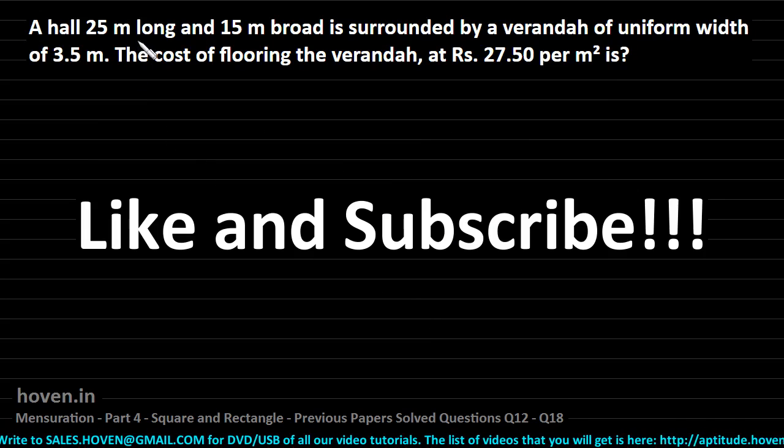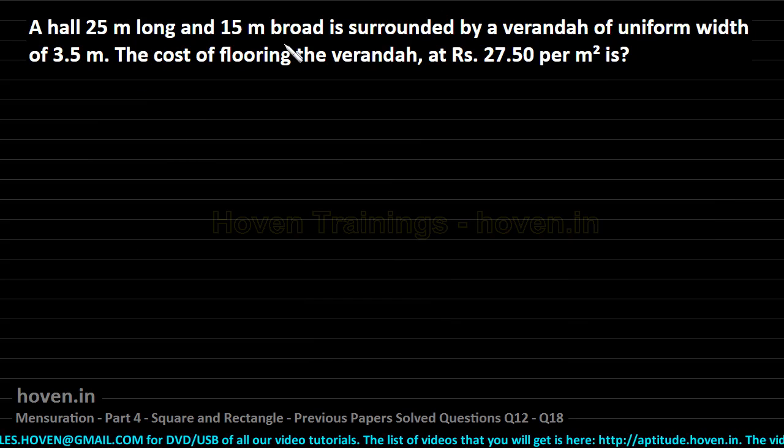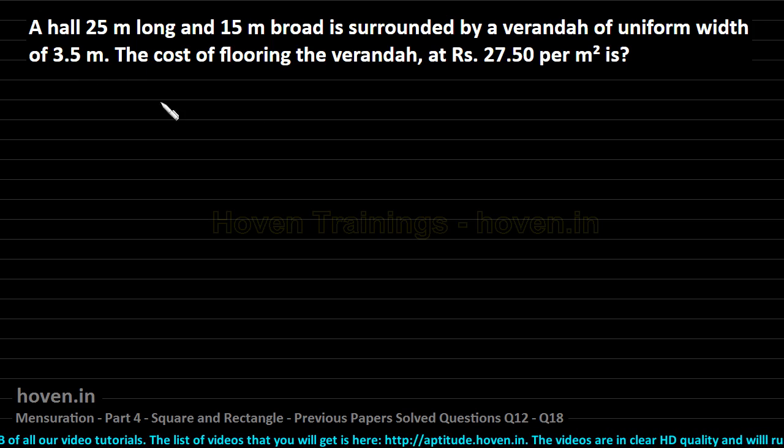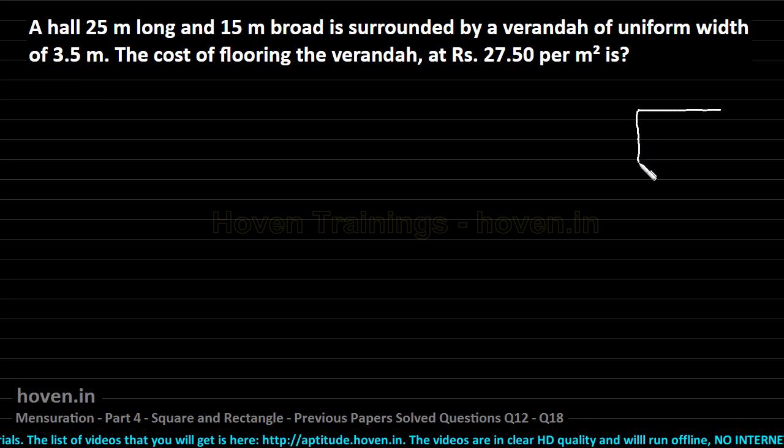A hall 25 meter long and 15 meter broad is surrounded by a veranda of uniform width 3.5 meter. We can draw a bit of schematic first that will help us understand the situation.